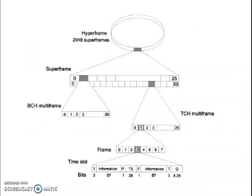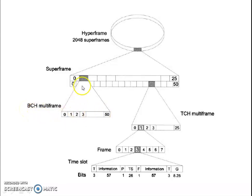This figure shows the hyper frame again. The super frames consist of a combination of 51 and 26 multi-frames, supporting the traffic channels and broadcast channels. The 51 is combined with 26, and 26 is combined with 51 multi-frames. Each individual unit is one complete frame carrying one single user's information.